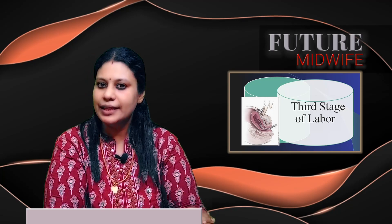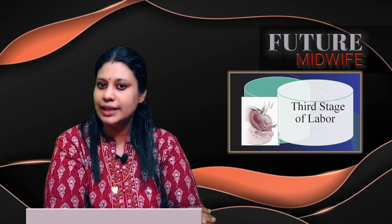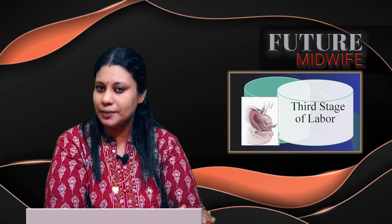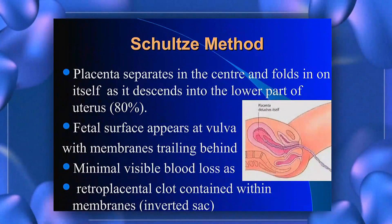There are two methods of placental separation: the Matthews Duncan method and the Schultze method. In the Schultze method, the placenta separates in the center, falls in on itself, and descends into the lower part of the uterus. The fetal surface appears at the vulva with membranes trailing behind, with minimal visible blood loss as the retroplacental clot is contained within the membranes.